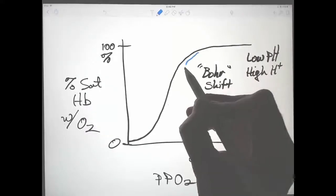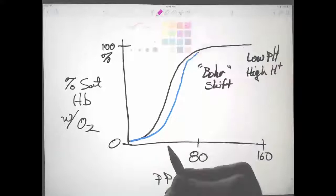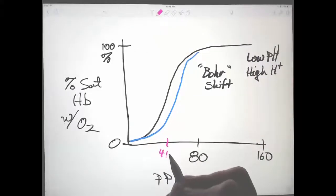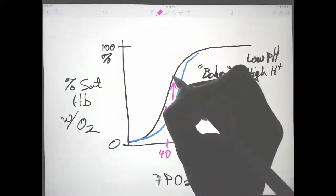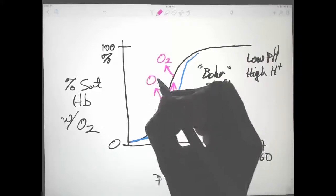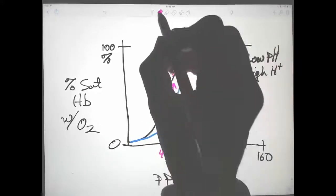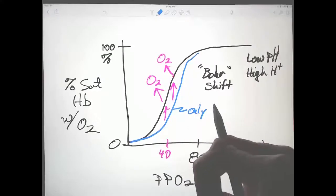It's a decrease in oxygen affinity. The result is that at any given partial pressure of oxygen, more O2 is released, and that happens specifically only in tissues that are acid.